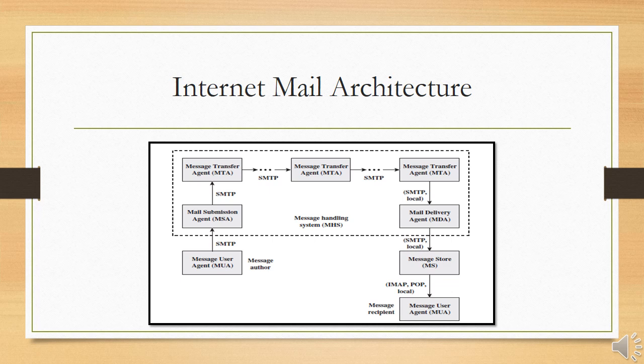The message transfer agent (MTA) relays the mail from one application-level hop to the next. It is like a packet switch or IP router in that its job is to make routing decisions and move the message closer to the recipient. Relaying is performed by a sequence of MTAs until the message reaches a destination MDA. An MTA also adds trace information to the message header. SMTP is used between MTAs and between an MTA and an MSA or MDA.